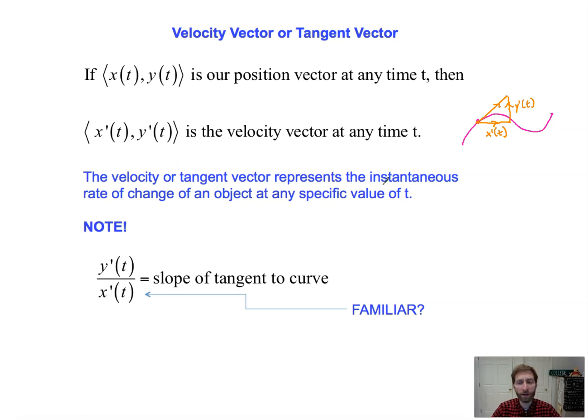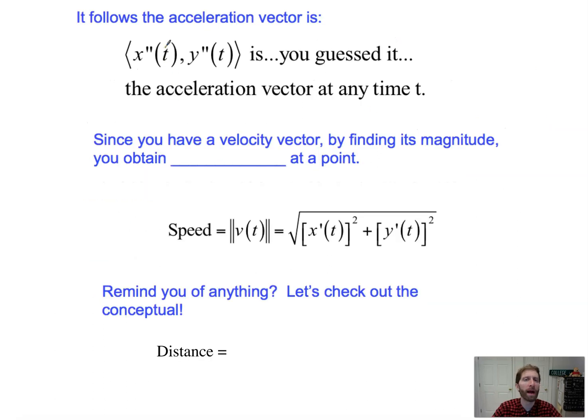So the velocity or tangent vector represents the instantaneous rate of change of an object at any time t. In general, the slope of that tangent to the curve is dy/dx. It's the same thing. It's just what we did in parametric, it's y prime of t over x prime of t. These are some of the main ideas. A couple other main ideas, and then we're going to use them. We're going to put it into practice.